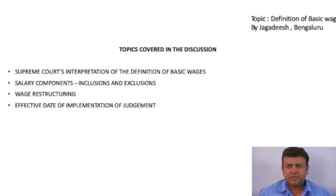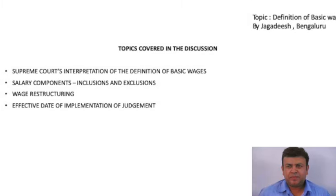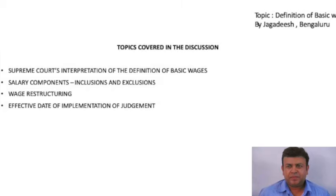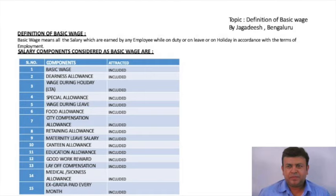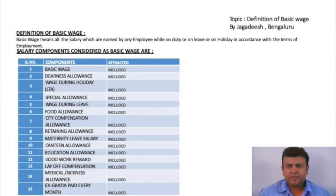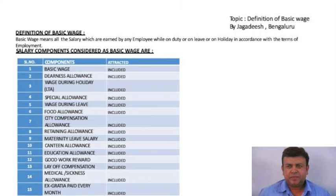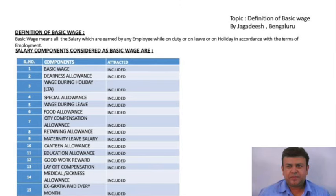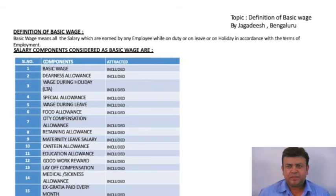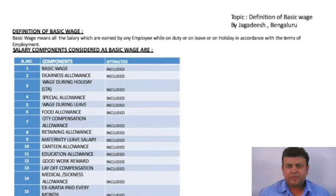Now let us understand what is basic wage. The basic wage definition can be divided into two parts. The first part talks about what is basic wage and the different salary components which come under it. The second part talks about the salary components which are excluded from the basic wage, for which Provident Fund contribution is not necessary. The first part says basic wage is the salary paid by an employer to the employee as per the terms of employment, whether the person is on duty, on leave, or on holidays.